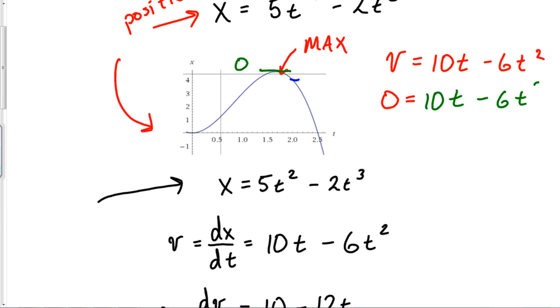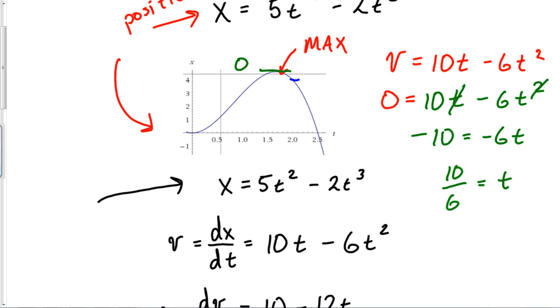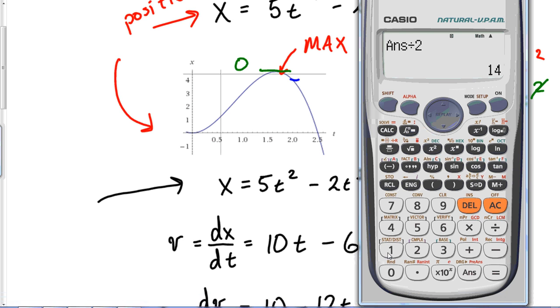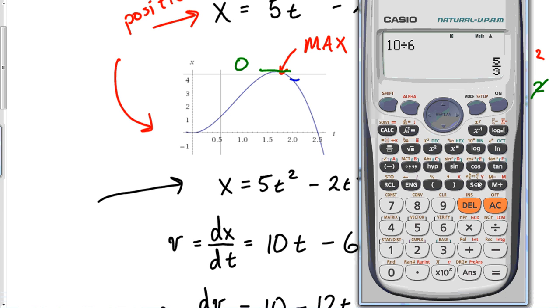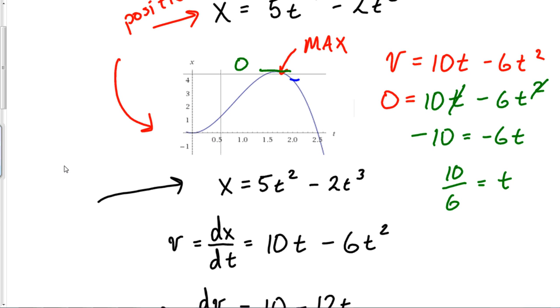I set my velocity equal to zero, which would give me 10t - 6t² equals zero. So in this case we've got 10 over 6 equals t. So my maximum values, let's see, this would give me my time at which my max occurs: 10 divided by 6 equals 1.67 repeating. So at 1.67 seconds the maximum occurs.